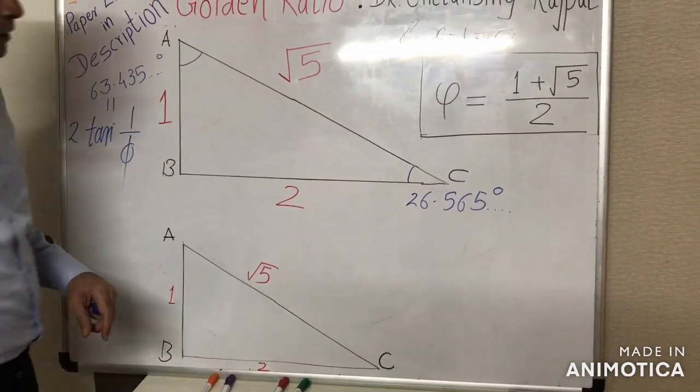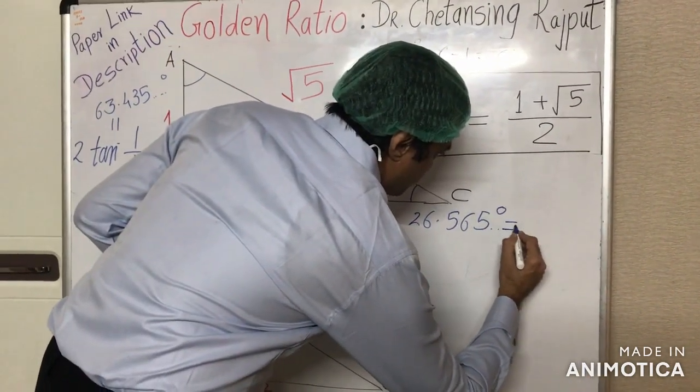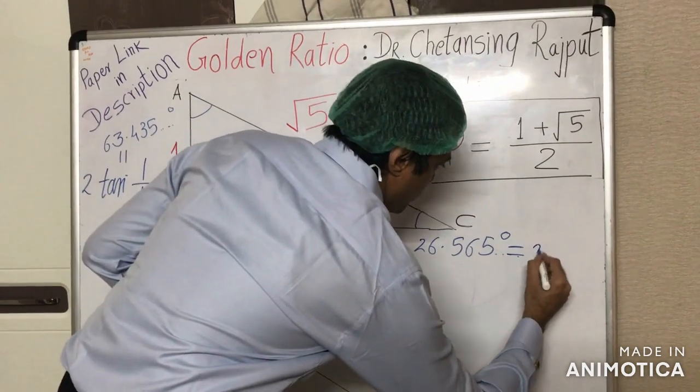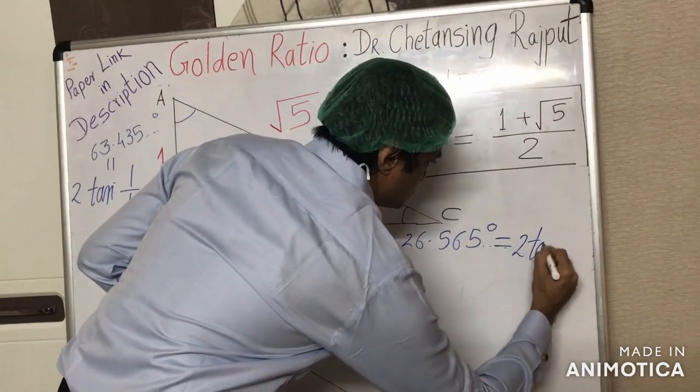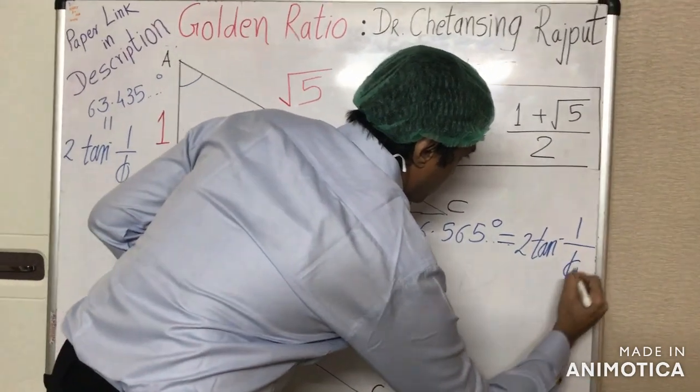Phi cube. And this angle here, this angle precisely equals twice the arc tangent of the inverse of phi cube.